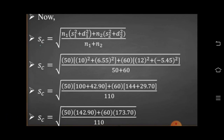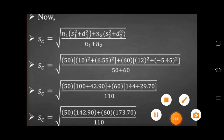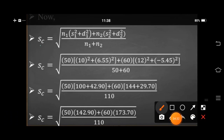Now we are having all information. Put it into the formula of combined standard deviation. According to the formula: Sc equals under root of n1 times (s1 squared plus d1 squared) plus n2 times (s2 squared plus d2 squared), divided by n1 plus n2. Putting all information: n1 equals 50, s1 equals 10 squared, plus d1 equals 6.55 squared, plus n2 equals 60, s2 equals 12 squared, plus d2 equals minus 5.45 squared, divided by 110.